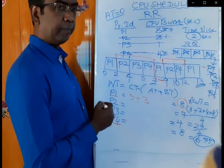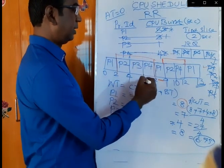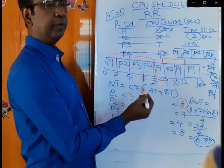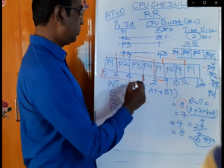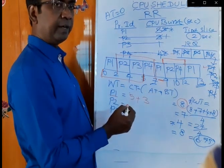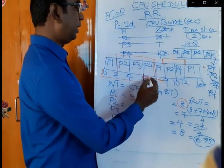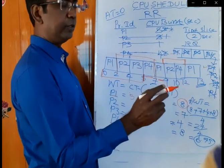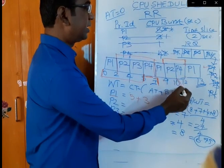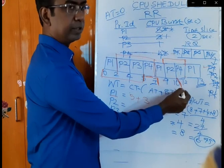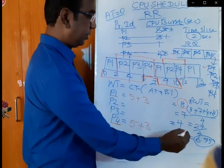For confirmation, let us check process P4. P4 enters the ready queue at time 0 and enters the CPU at time 5, so it waits 5 minus 0 equals 5. Then that period it is spending in the CPU, so we do not count it. Then P4 comes back to the ready queue and enters the CPU again at time 10: 10 minus 7 equals 3. So 5 plus 3 equals 8, which is the waiting time for P4.